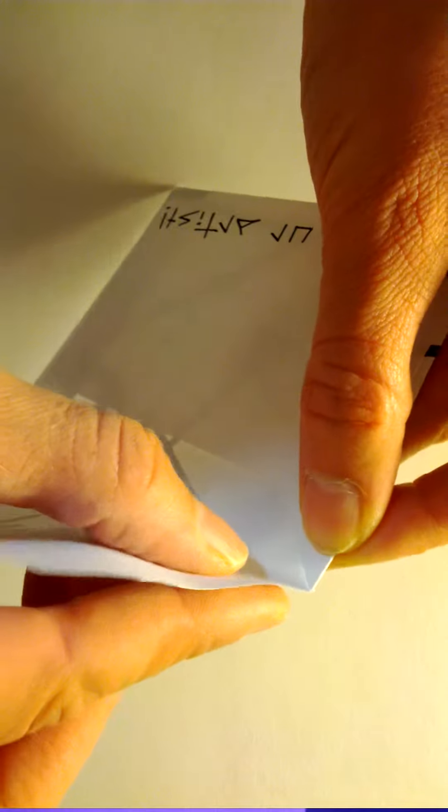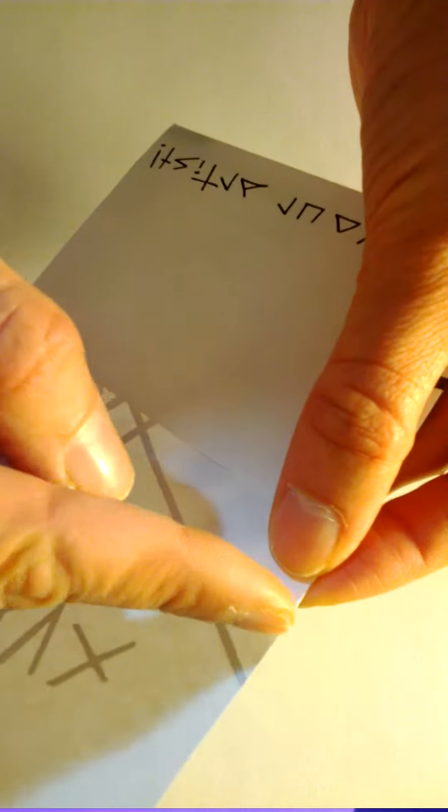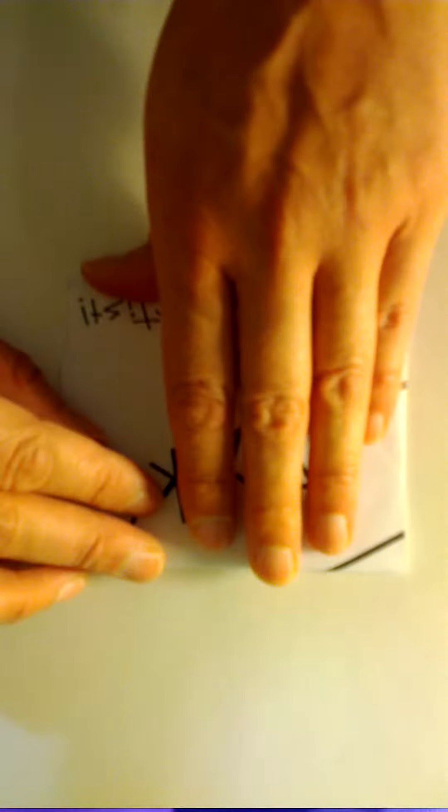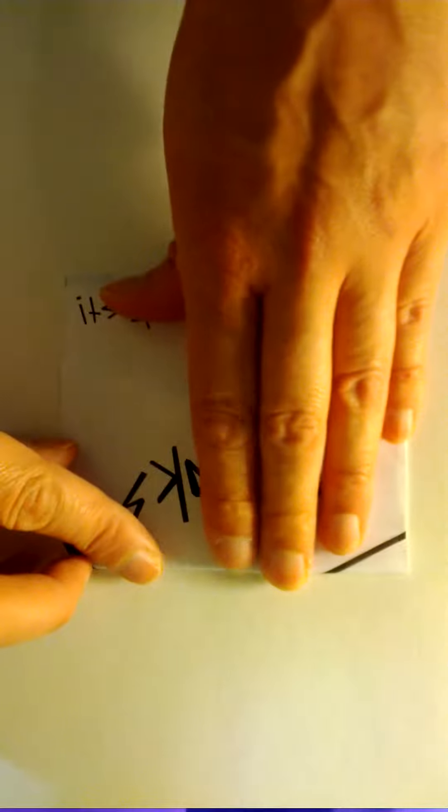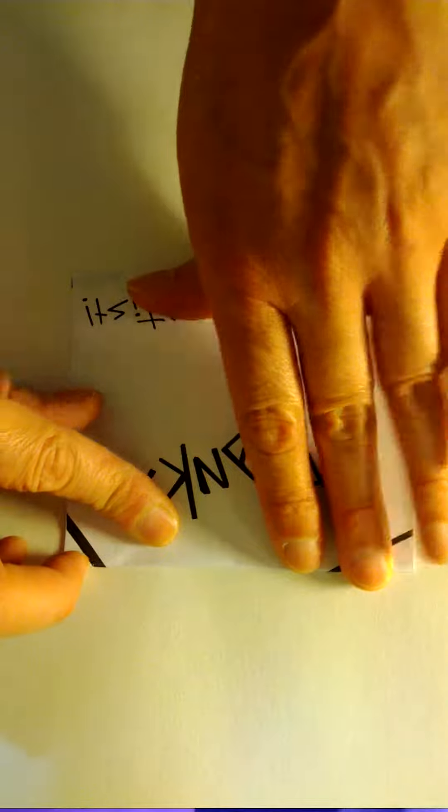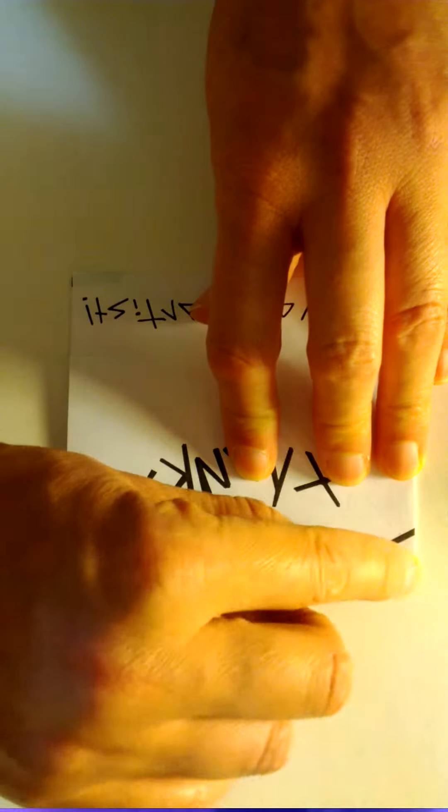And then you do the same thing up here, and you want to pay attention to folding right at the corner there. I got the corner. And then bring it down. You can see the dashed line, and then you crease.